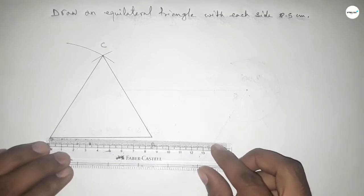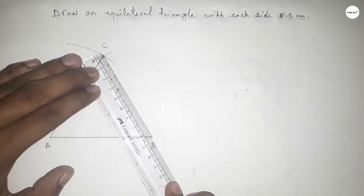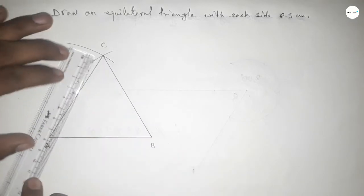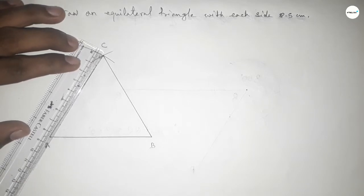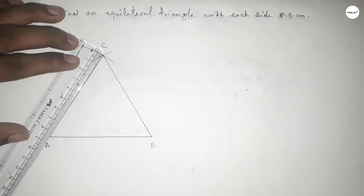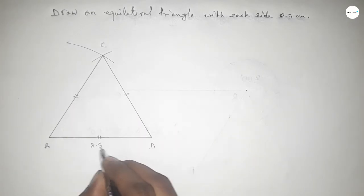Now checking all the sides are equal or not. So this is 8.5 centimeters, this side 8.5 centimeters. So all the sides are equal, so mark the equal sign on the three sides.